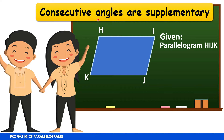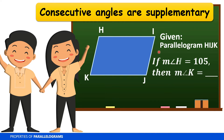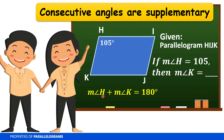For example, the measurement of angle B plus the measurement of angle C equals 180 degrees. Let's apply that property in parallelogram HIJK. Given that the measure of angle H is 105, we find angle K by subtracting from 180: 180 minus 105 equals 75. Therefore, angle K is equal to 75 degrees.